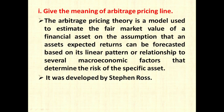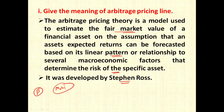The next question is: give the meaning of the arbitrage pricing theory (APT). The arbitrage pricing theory is a model used to estimate the fair market value of a financial asset on the assumption that an asset's expected return can be forecasted based on its linear relationship to several macroeconomic factors that determine the risk of the specific asset. This was developed by Stephen Ross. Unlike the CAPM model which uses only one factor (beta), the APT model makes use of multiple factors such as GDP, inflation, oil price rises, etc., to compute expected returns.